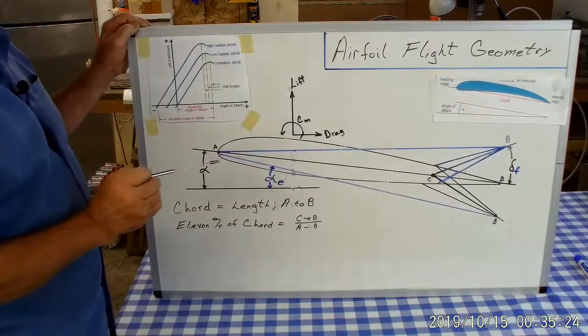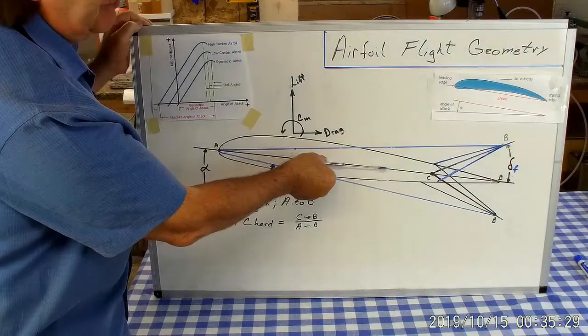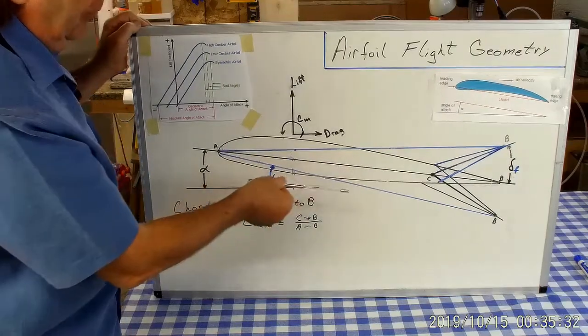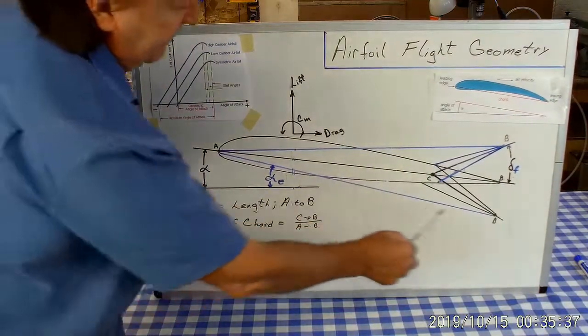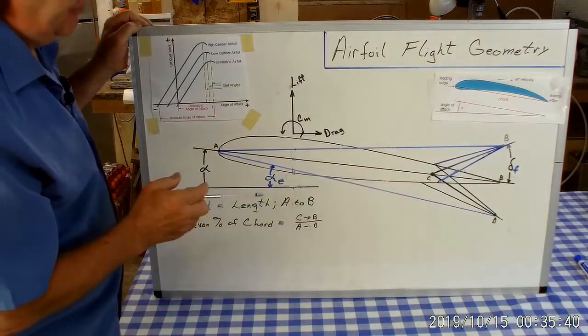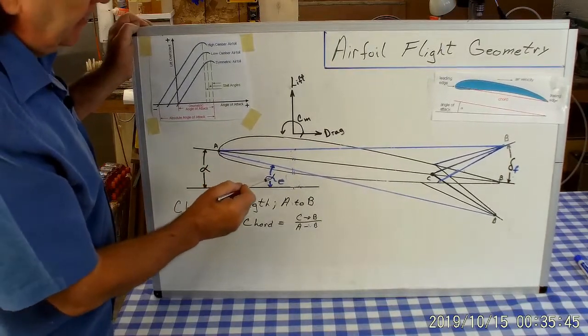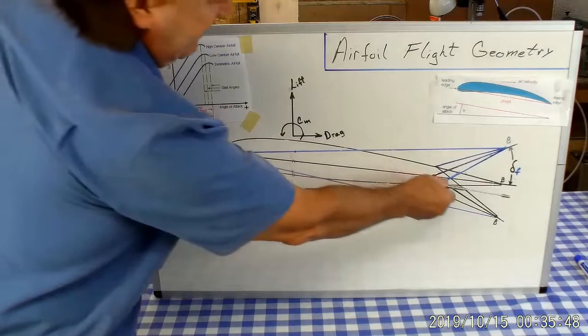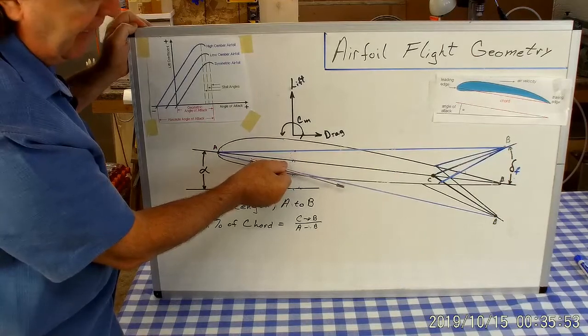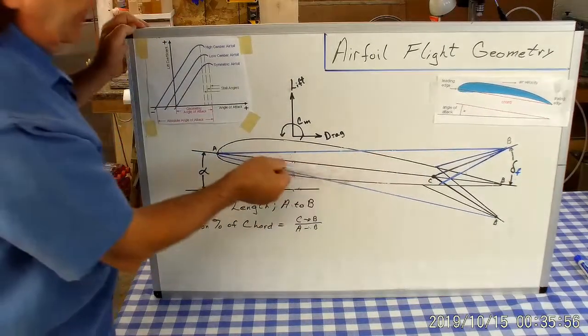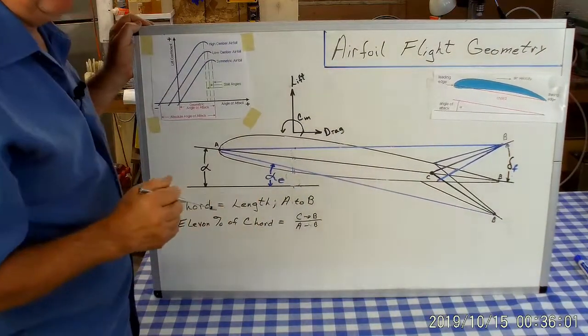That essentially changes when we move the flap. This cord line is still what aerodynamicists use to measure relative to, but when you deflect the flap up or down you get a new what I call effective cord line. It's a non-conventional notation but for purposes of our discussion here is perfectly fine. So I'm calling that alpha sub e. When we deflect the flap down the effective cord line goes to a higher angle of attack, and when we deflect the flap up that effective cord line goes to a lower angle of attack. That changes the aerodynamics of the airfoil.